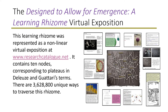The design to allow for emerging a learning rhizome virtual exposition. This learning rhizome was represented as a non-linear virtual exposition at the research catalogue infrastructure. It contains 10 nodes corresponding to plateaus in the Deleuze-Guattari terms. There are 3,628,800 unique ways to traverse this rhizome.